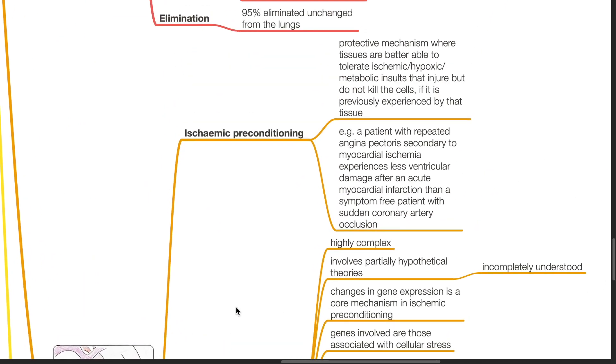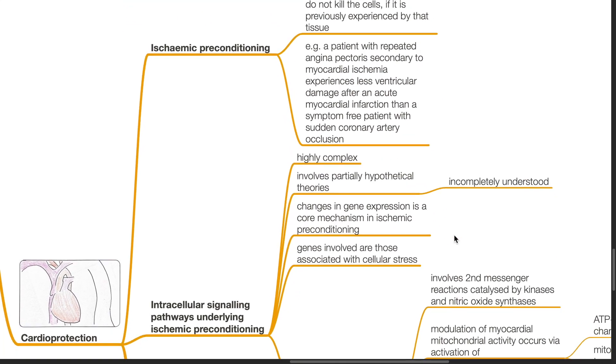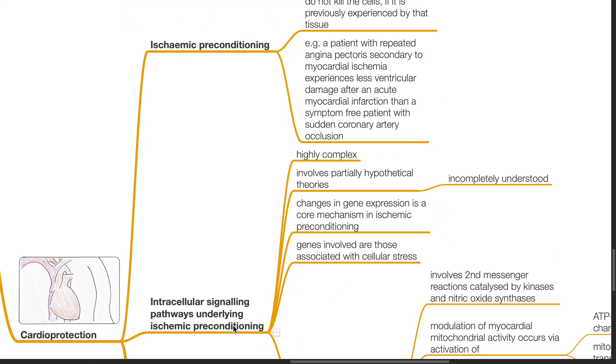Cardioprotection. Sevoflurane has cardioprotective effects. Ischemic preconditioning is a protective mechanism where tissues are better able to tolerate ischemic, hypoxic, or metabolic insults that injure but do not kill the cells if previously experienced by that tissue. For example, a patient with repeated angina pectoris secondary to myocardial ischemia experiences less ventricular damage after an acute myocardial infarction compared to a symptom-free patient with sudden coronary artery occlusion.